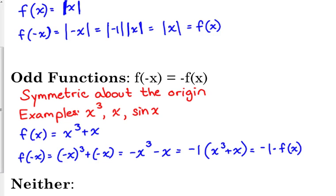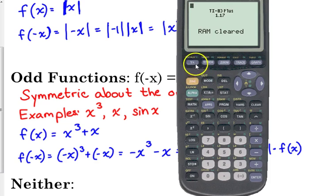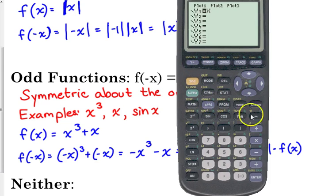When you plug in negative x, you get the exact opposite of the original function. That's what f of negative x equals negative f of x means. When you plug in negative x, you get the exact opposite of the original function. So x cubed plus x is an odd function. So let me show you what to graph that real quick. So you can see, hopefully, this rotational symmetry is symmetry about the origin.